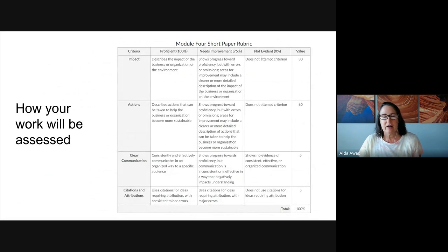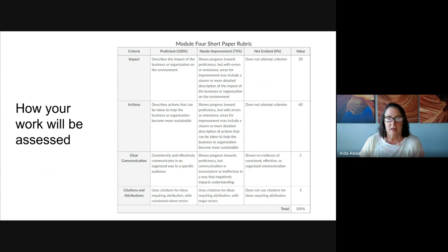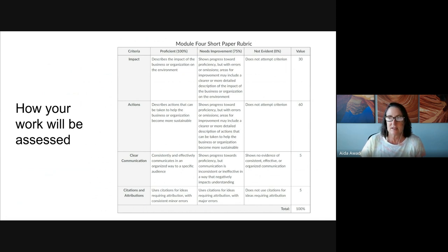Let's take a look at how your paper will be assessed. This grading rubric focuses heavily on the impact and actions portions of your writing. Please review the rubric before you submit your short paper to ensure you've addressed all of the rows. First, focus on impact. Even the most sustainable businesses or organizations have areas where they can improve or where they have a negative impact on the environment. Make sure you describe the impacts the business or organization has on the environment using specific examples.